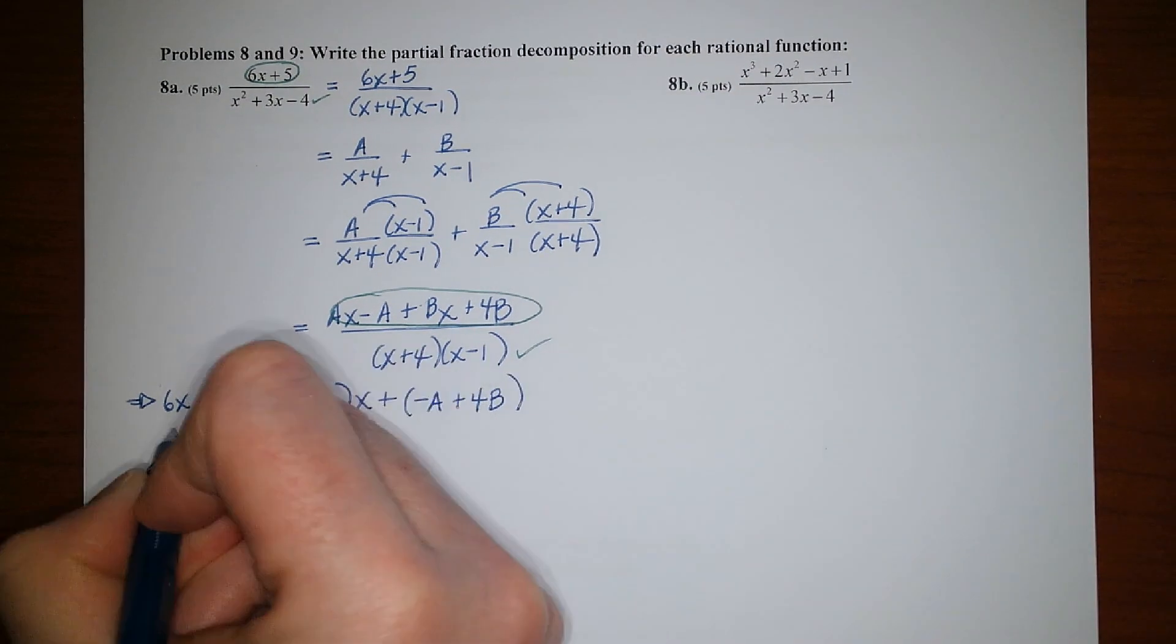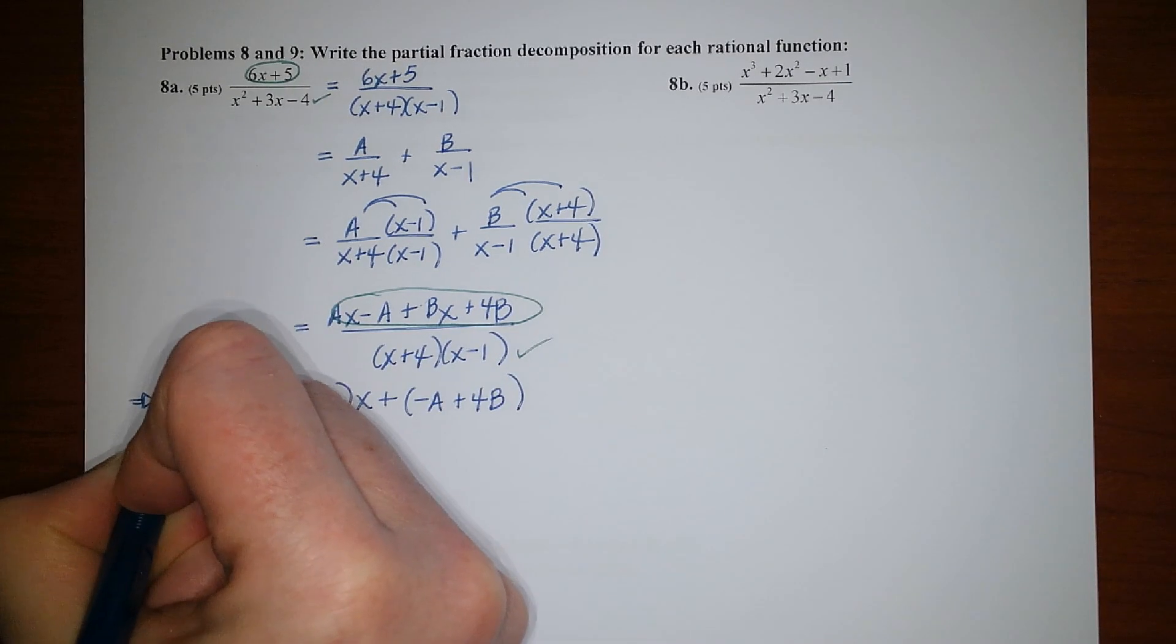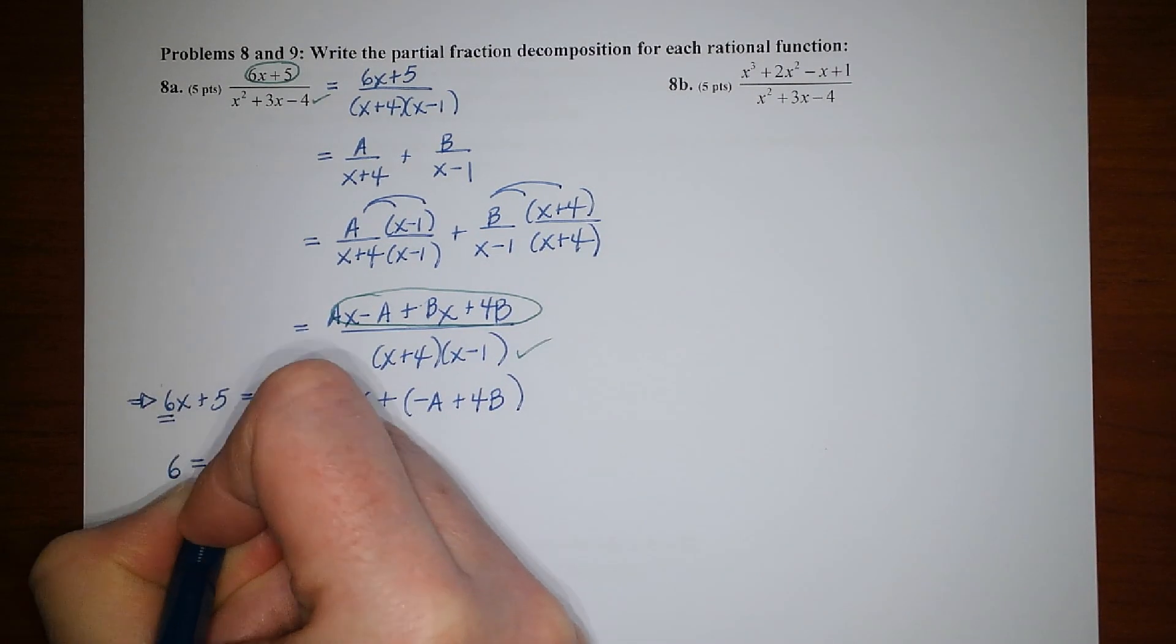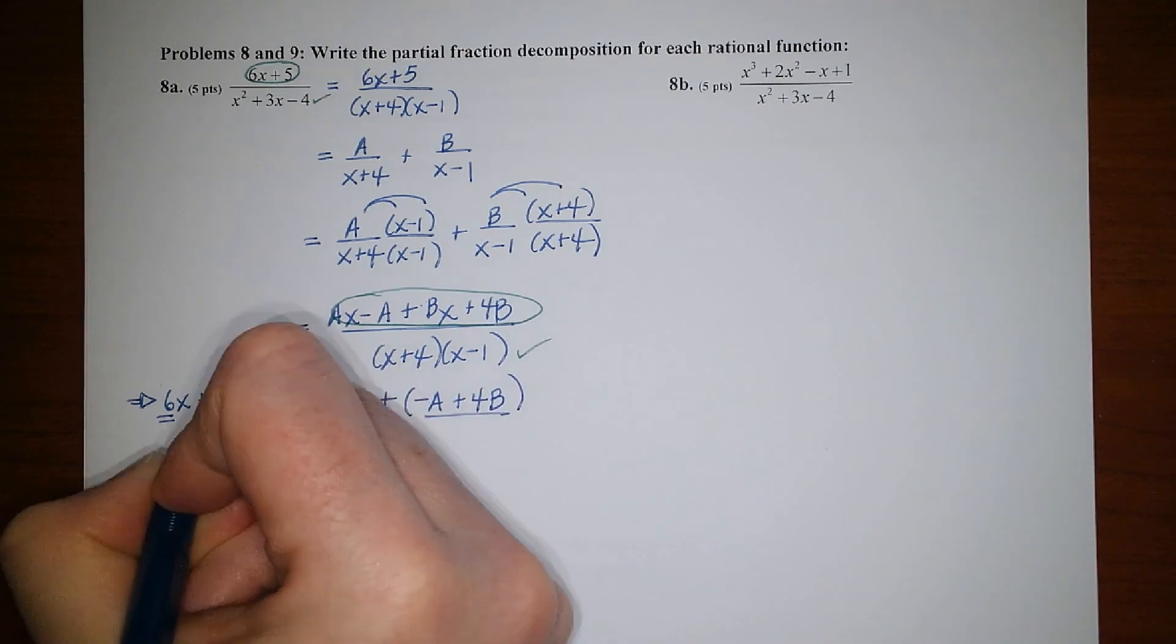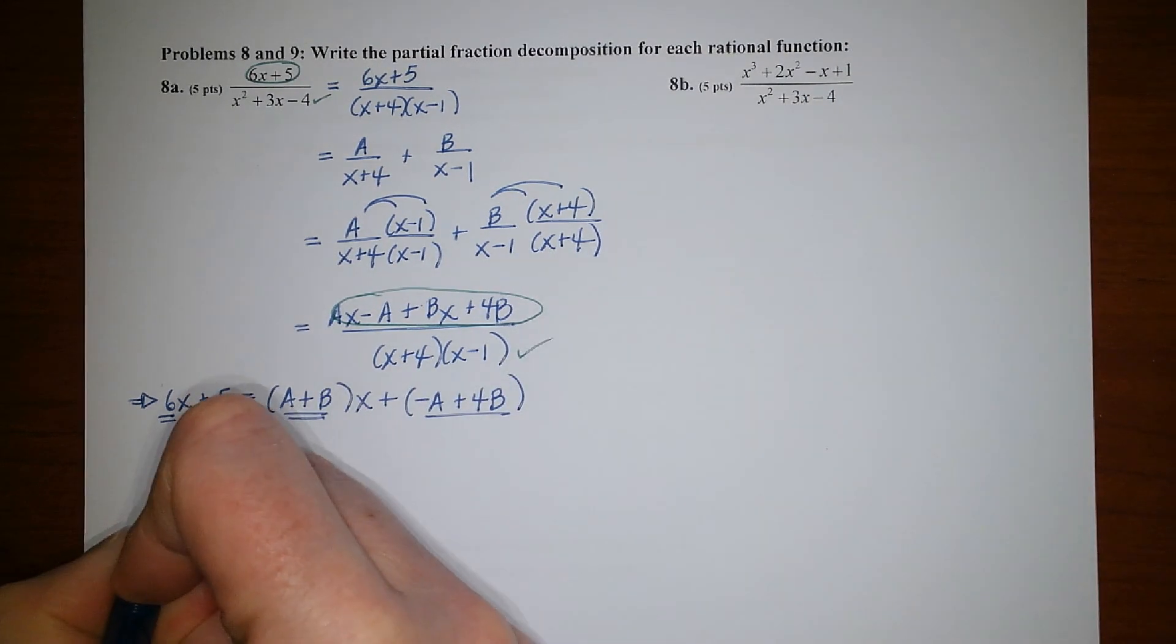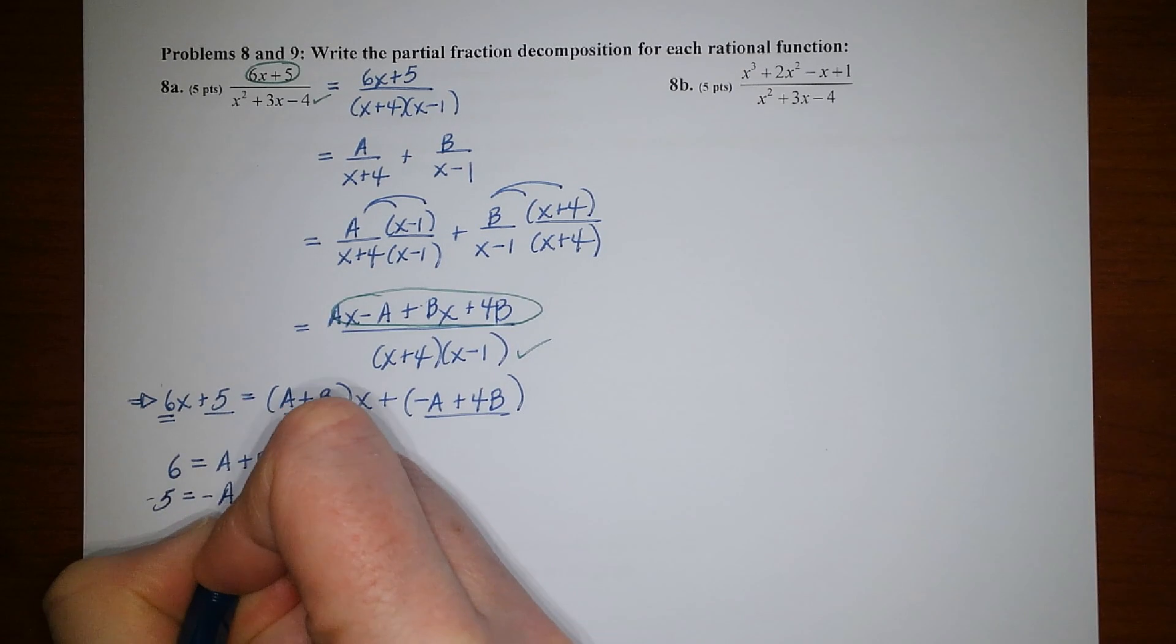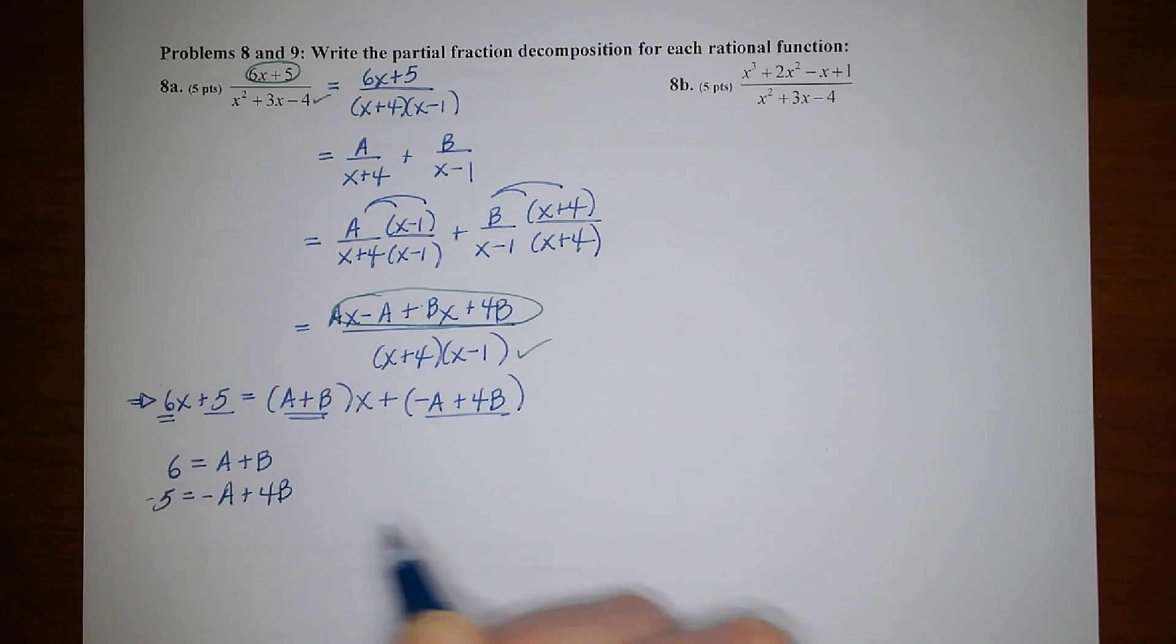And that leads to a system of equations because A plus B must equal 6, and negative A plus 4B must equal 5.